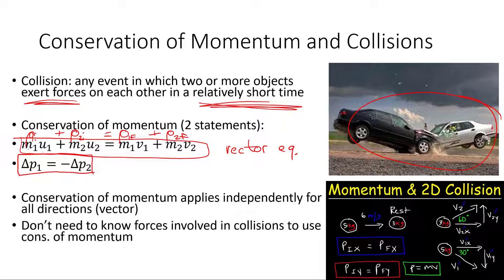We need to put in the correct signs for all of our velocities or momenta. Since momentum is conserved as a vector, we can break down momentum into x and y components, and conservation of momentum applies independently for all directions.